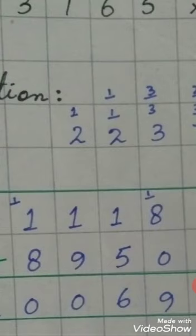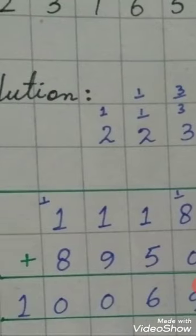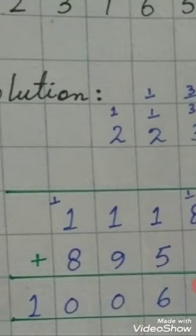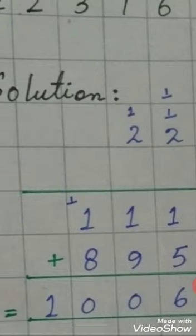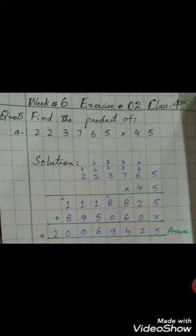8 plus 1 is 9, plus 1 is 10, write 0, carry 1. 8 plus 1 is 9, plus 1 is 10, write 0. Here we have no number, so it is 10, 1, and then it is 10. Thank you.